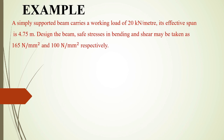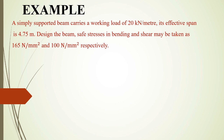Let's do an example. A simply supported beam carries a working load of 20 kN/m with an effective span of 4.75 m. Design the beam; safe stresses in bending and shear may be taken as 165 N/mm² and 100 N/mm² respectively. Our working load is 20 kN/m. The dead load is PL/300 = 0.475 kN/m. Total load W = working load + dead load = 30.475 kN/m.